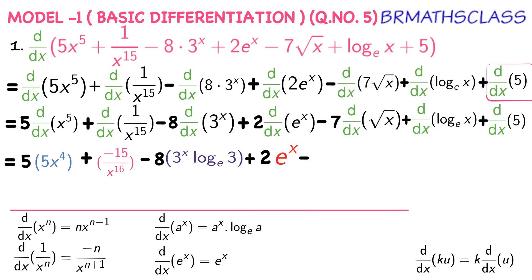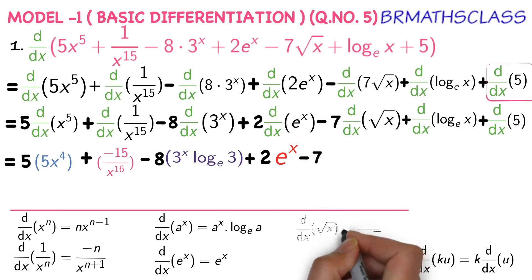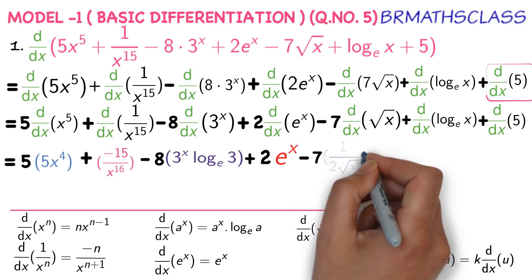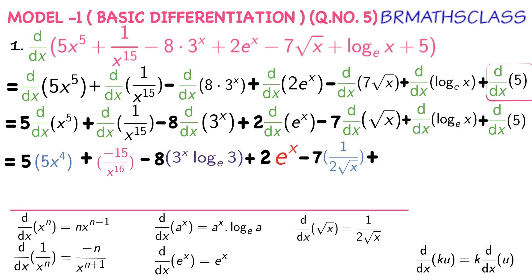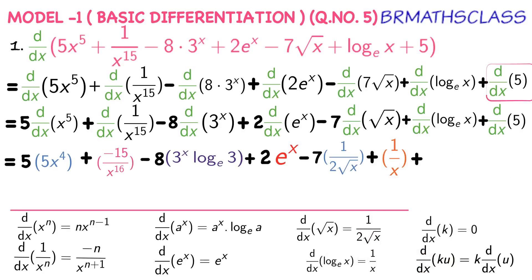Minus 7 into — we know this formula: derivative of root x, that is d by dx of root x, is 1 divided by 2 root x. Plus — the direct formula for derivative of log x base e: what is it? It is 1 by x. Plus — derivative of 5: we know that derivative of a constant is 0, so derivative of 5 is 0.